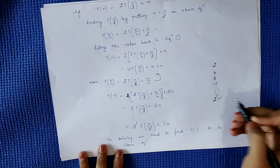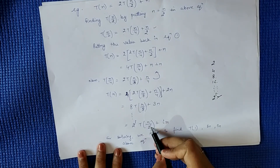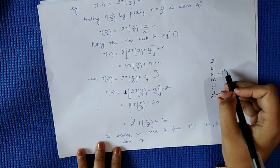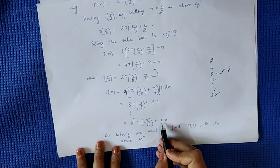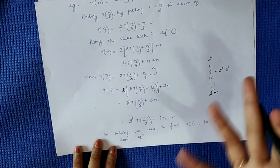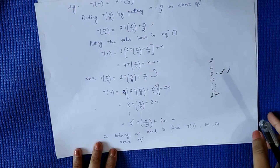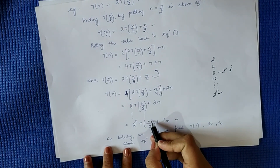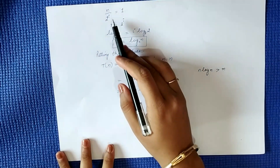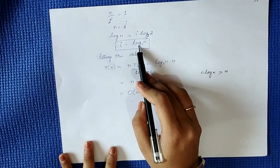This continues up to 2^i. So the generalized form is 2^i × T(n / 2^i) + i·n. To find T(1), we set n / 2^i = 1, so n = 2^i, therefore log₂(n) = i·log₂(2) = i, meaning i = log₂(n).